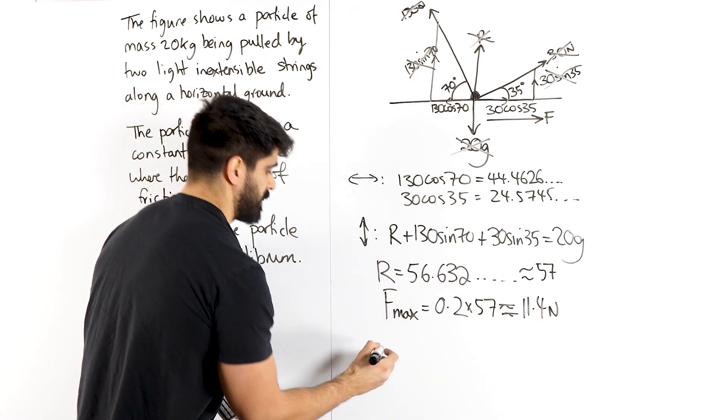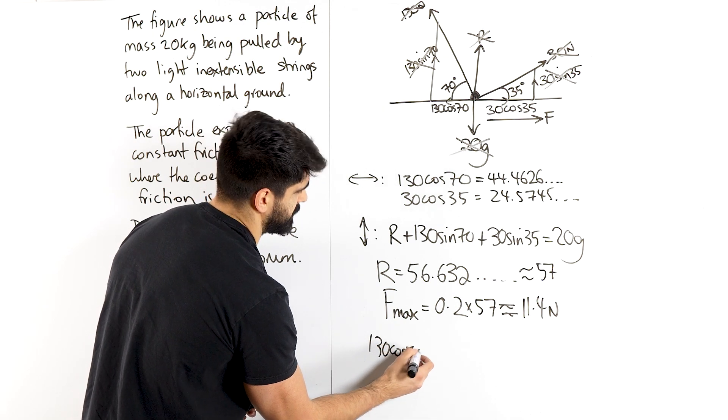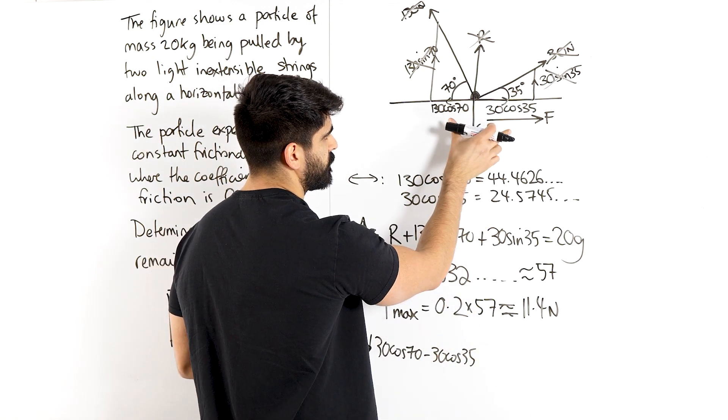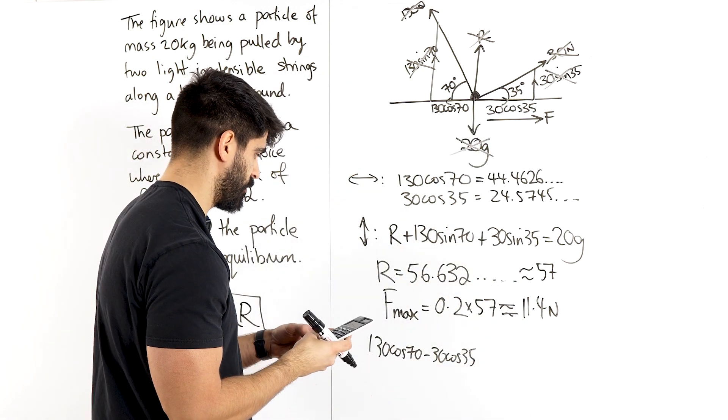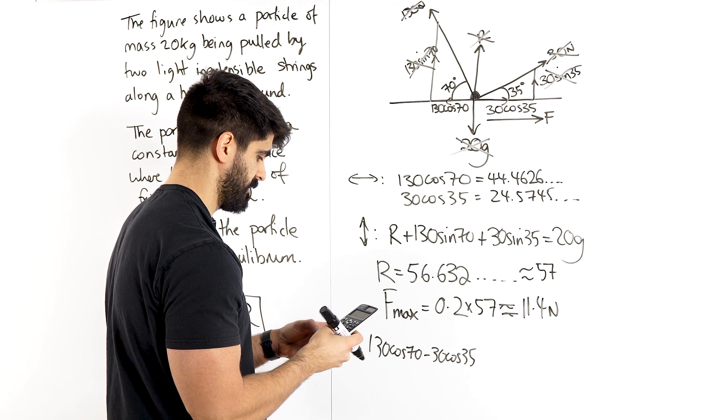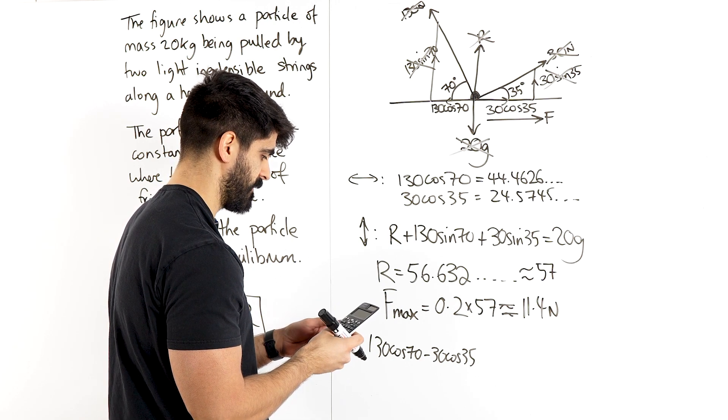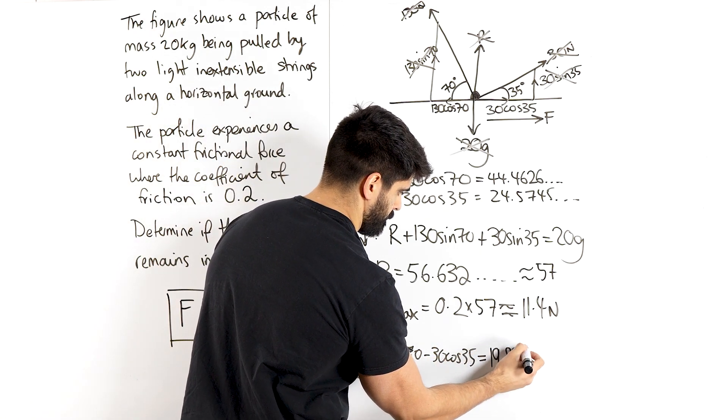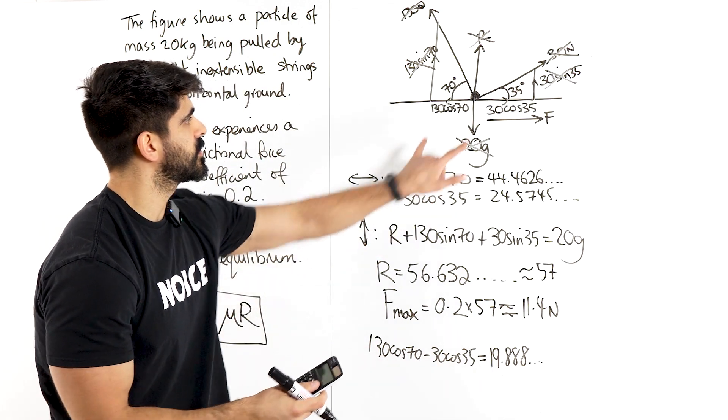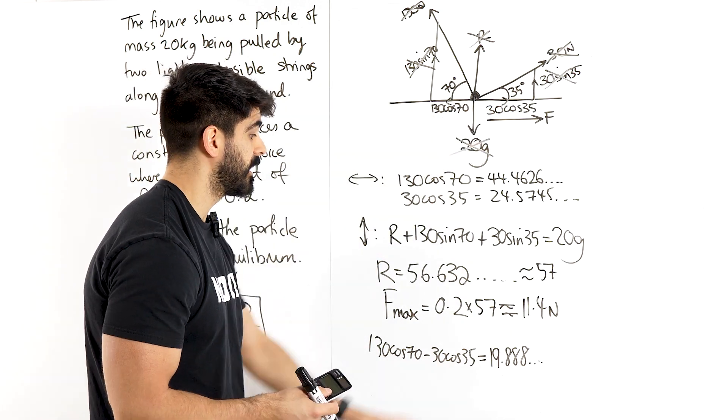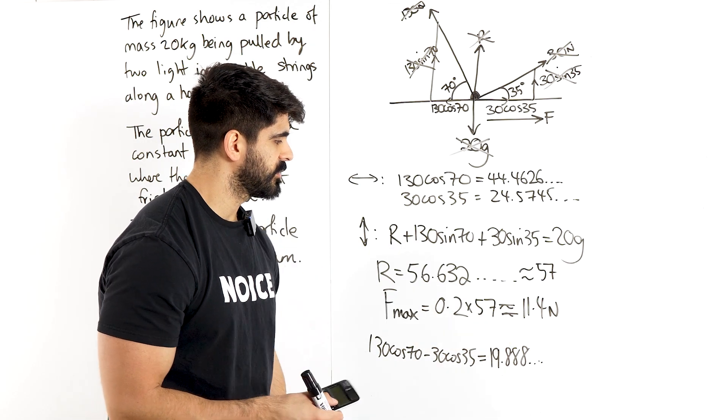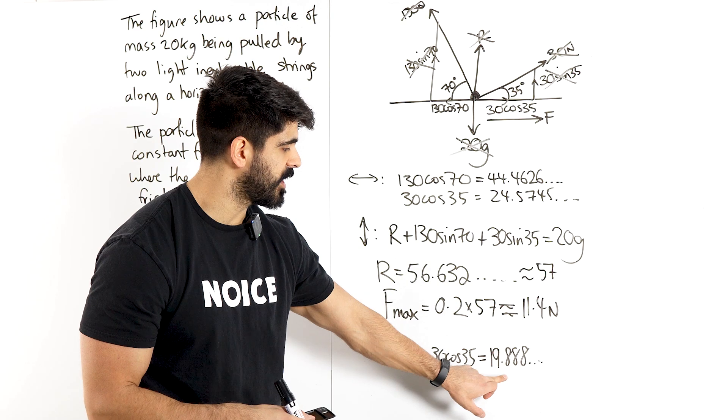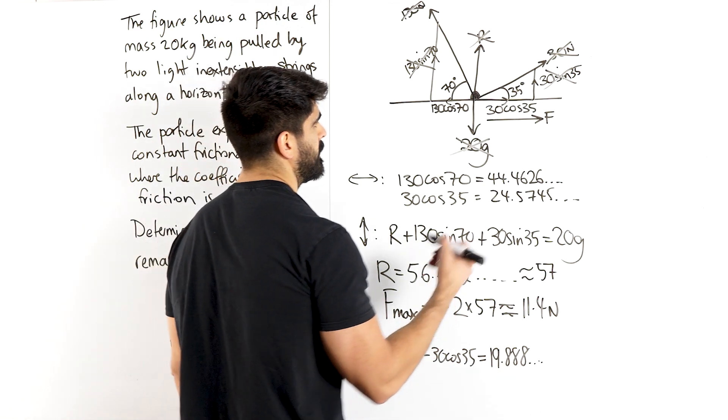Now let's take away these values. So we're going to do 130 cos 70 minus 30 cos 35. And from there we're going to see that difference, is F large enough to counter that. So 130 cos 70 minus 30 cos 35 is 19.88. So this value, this difference, is worth 19. But friction can only provide 11.4 of support. It's not enough to counterbalance the difference.